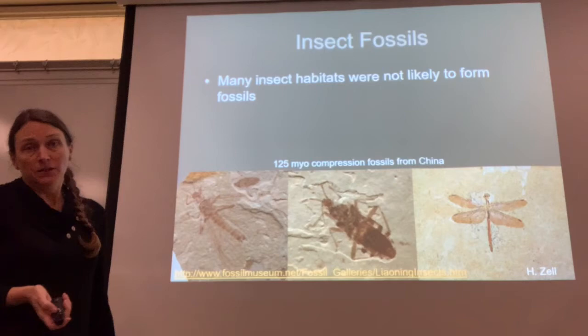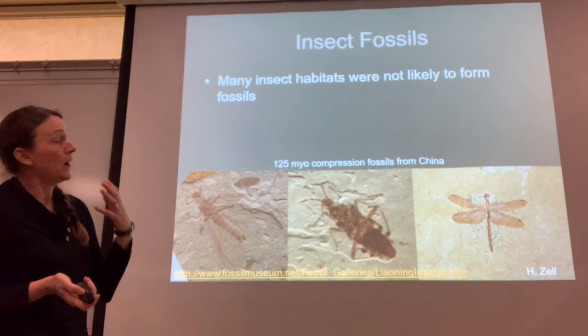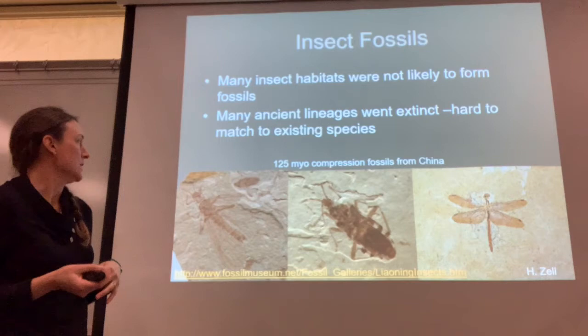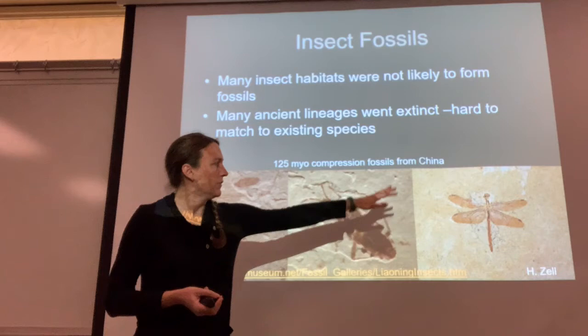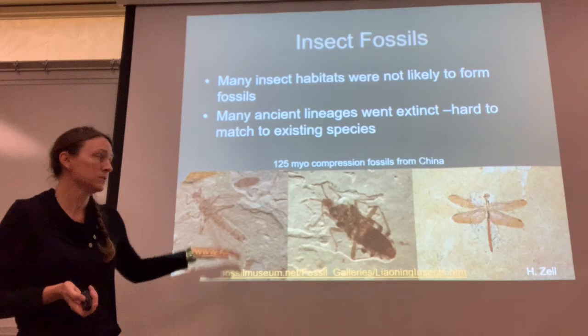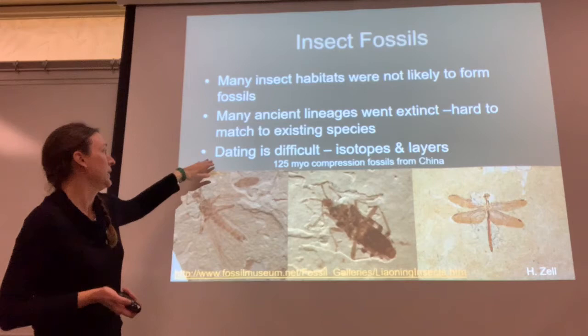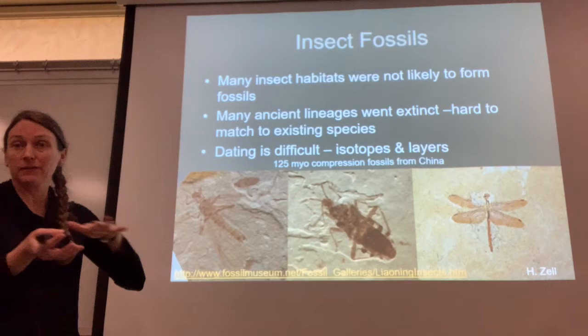Here are some insect fossils. Many insect habitats were not likely to form fossils, but a lot of our aquatic habitats were. Many ancient lineages also went extinct, so it's hard to match them to existing species. But here we have a fossil stonefly, a fossil hemipteran, and a fossil odonate or dragonfly — all about 125-million-year-old compression fossils found in China. Dating is difficult, but we can use isotopes and the age of layers in the nearby region to help us understand the dates.